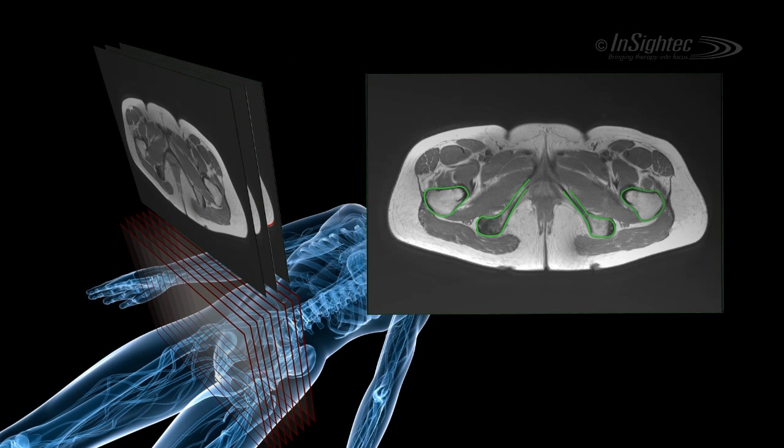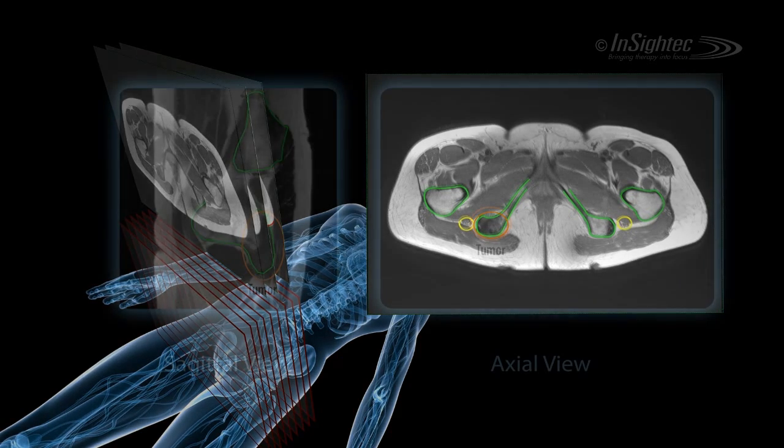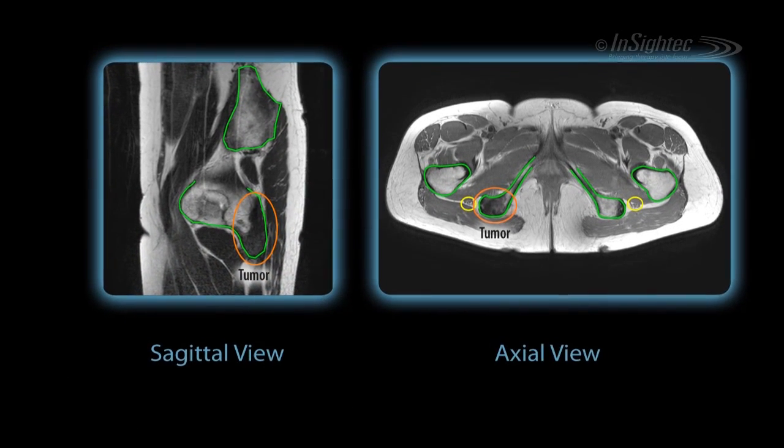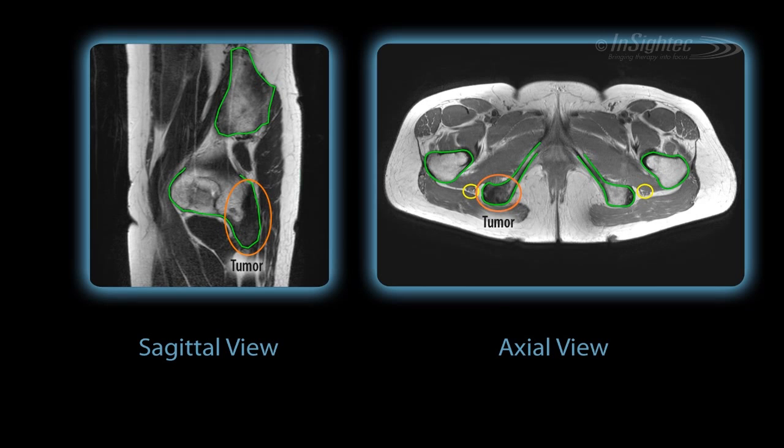This axial pelvic image shows the femur, pelvis, bone tumor, and the sciatic nerves. This visualization enables the physician to pinpoint the anatomy and treatment target for safe and effective treatment.